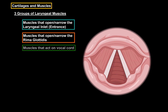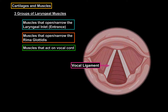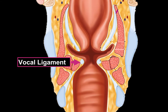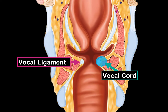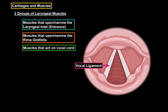The last muscle group are the muscles that act on the vocal cord itself. The vocal ligament is located within the mucous membranes. So the mucous membrane together with the vocal ligament is what is referred to as the vocal cords. These muscles act directly on the vocal cord, which essentially is the vocal ligament.